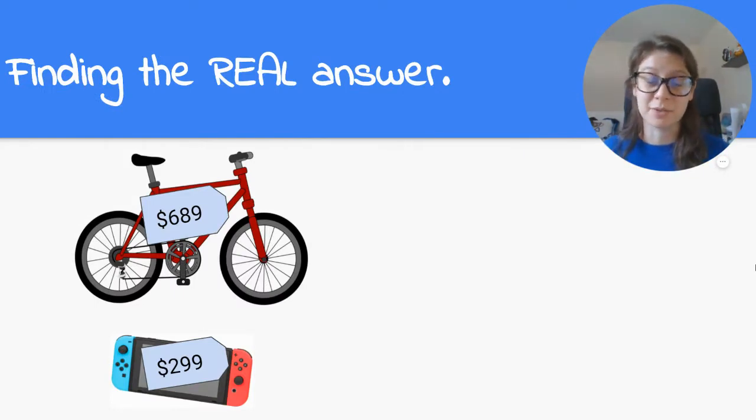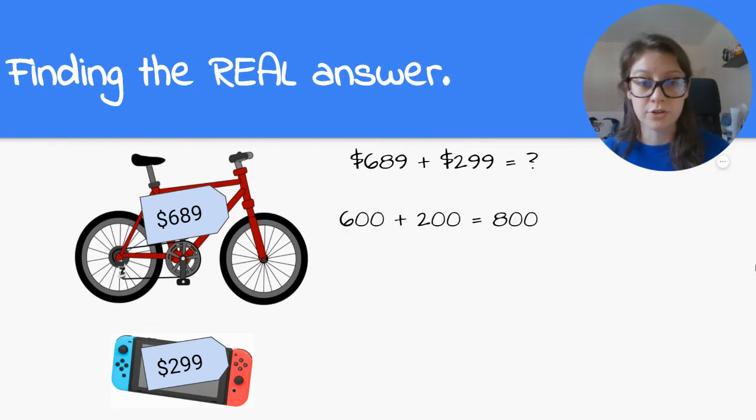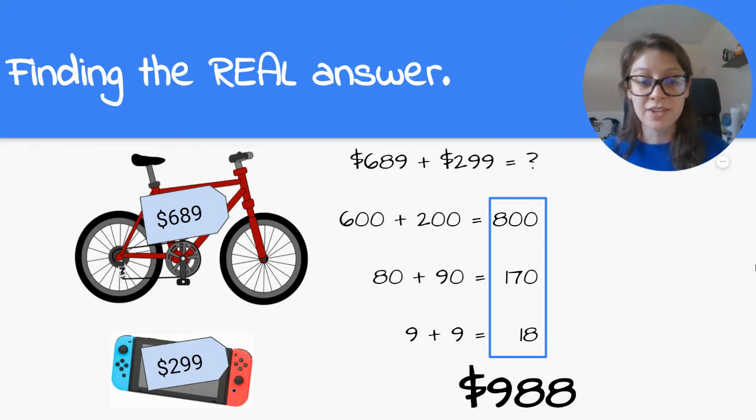So then I found the real answer. So I did $689 plus $299 equals my real answer. I used the partial sum strategy to help me solve this. So I did $600 plus $200 equals $800. $80 plus $90 equals $170. $9 plus $9 equals $18. Then I had to add all of those pieces together. So I added $800 plus $170 plus $18, and I got my answer of $988.